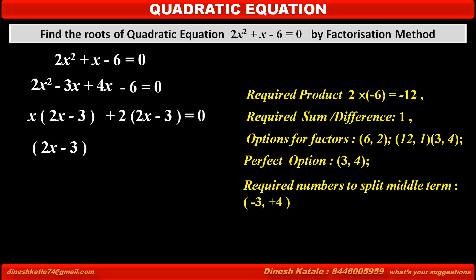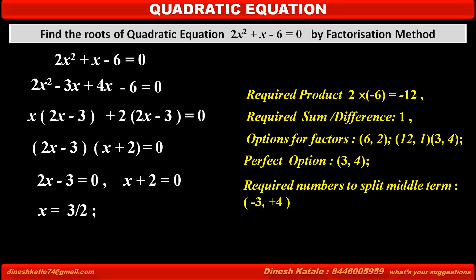Since the bracket (2x - 3) is common in both terms, by taking (2x - 3) common, we get (2x - 3)(x + 2) = 0. Therefore, either the first bracket: 2x - 3 = 0, giving x = 3/2, or the second bracket: x + 2 = 0, giving x = -2.